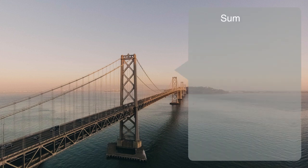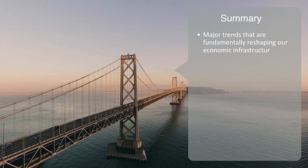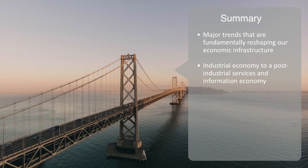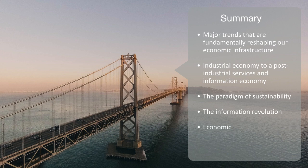In summary, we've been taking a quick overview of the context and major trends that are fundamentally reshaping our economic infrastructure. We've talked about this process as a shift from an industrial economy to a post-industrial service and information economy. We've given an outline to four major trends that are part of this process, including the rise of the paradigm of sustainability and its focus on integrated systems required to enable the circular economy, the information revolution and how it's networking our world, making it distributed, smarter and more responsive. We briefly talked about economic globalization, as it has worked to disaggregate our once monolithic infrastructure systems, and increasingly turn them into multinational, multi-stakeholder networks.